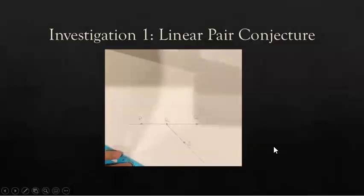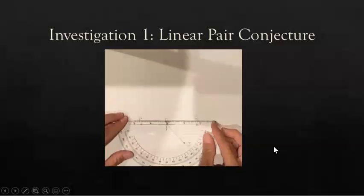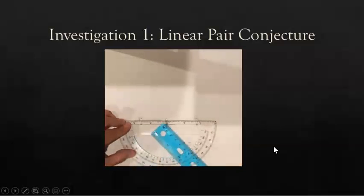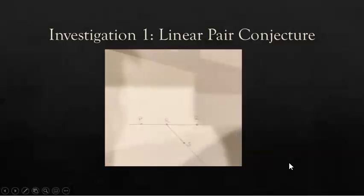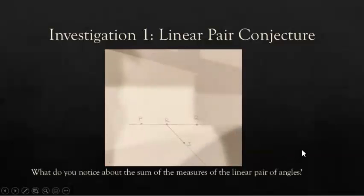You have just created a linear pair of angles. Place your protractor along PQ. You're going to want the zero point right at the point of R. Measure these two angles. What do they add up to be? What do you notice about the sum of the measures of the linear pair of angles that you drew?